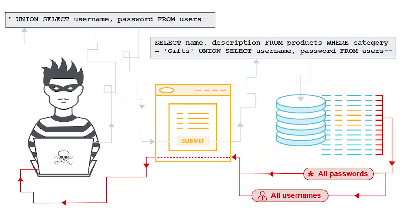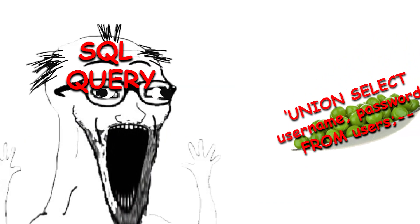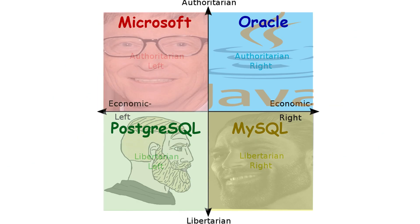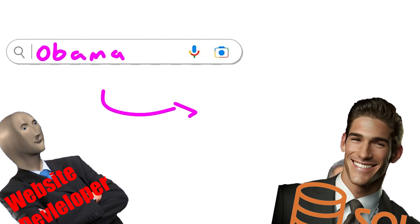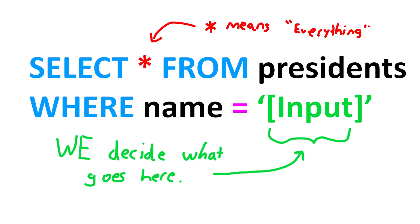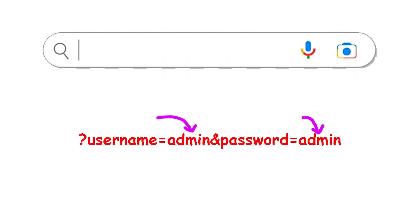As it turns out, SQL injections really are as easy as passing your unfiltered input into a SQL query. The way you set up your input varies a lot, and it depends on both the SQL version that you're attacking and how the specific application is set up. Let's try an example. Let's say Website Developer and SQLman are building a website that lets the user search for US presidents. A typical SQL query might look something like: SELECT all FROM presidents WHERE name equals user input.